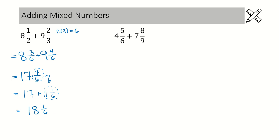Let's take a look at another example. We have denominators of six and nine — they're not common. Again our first step is to figure out the lowest common denominator, so let's rewrite this question leaving the fractions blank, and then figure out the lowest common denominator. When working with a six and a nine, show that you want to multiply those denominators together, but factor out the greatest common factor — in this case, that would be a three.